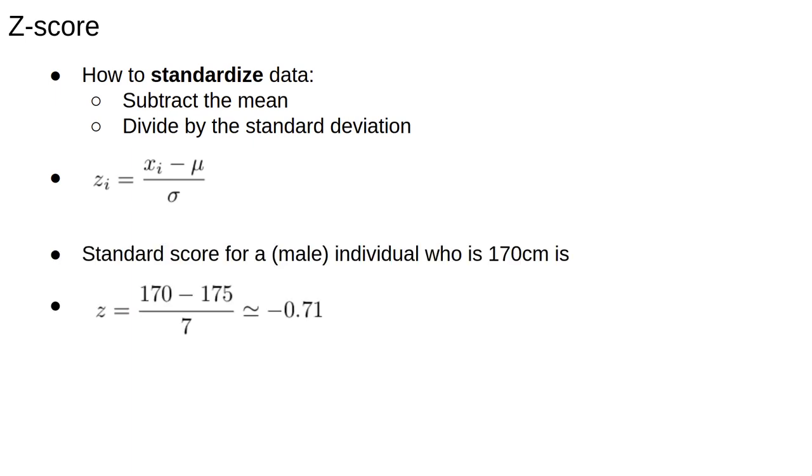Using standardized variables makes observations easier to interpret. For example, if average height for males is 175 centimeters with standard deviation 7 centimeters, this is roughly what the values are for England, then an individual who is 170 centimeters has a standard score, or z-score,